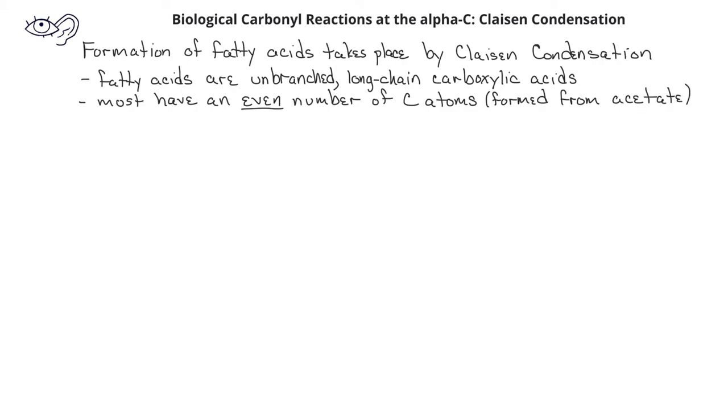Before reacting, the acetate ion is first converted into a thioester, which is an ester with a sulfur in place of the carboxylate oxygen. Another key ingredient is malonyl thioester, which is formed by carboxylation of the acetate thioester.